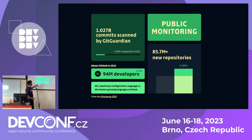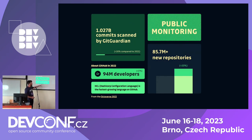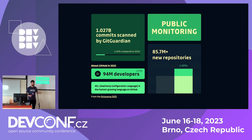GitHub is a very popular place — over a billion commits are made to GitHub every single year, 85 million new repositories were made last year, and these are just public. So there's lots of information and lots of source code in here. Every single one of those billion commits, at GitGuardian, we scanned for secrets.